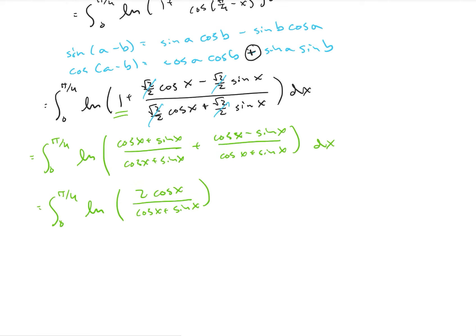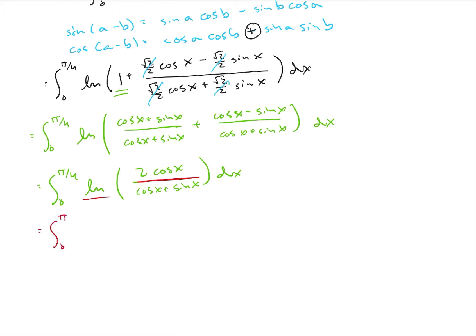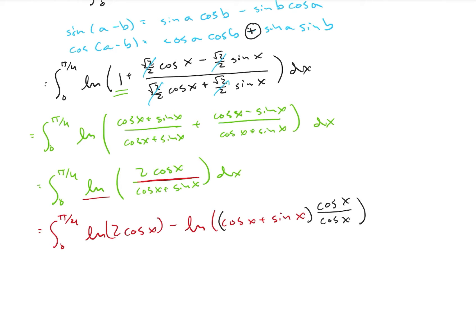Now I rewrite this using log properties as the difference: ln of 2 cosine x minus the natural log of cosine x plus sine x. Then I multiply cosine x plus sine x by cosine x over cosine x. Dividing through by cosine x gives 1 plus sine x over cosine x, which is ln of 1 plus tangent of x.